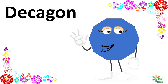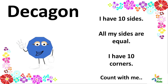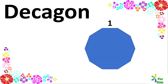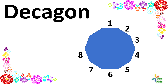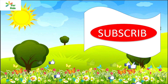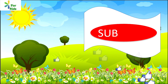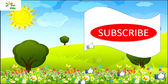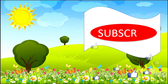Decagon. Say hi to decagon. I have ten sides. All my sides are equal. I have ten corners. Count with me. One, two, three, four, five, six, seven, eight, nine, ten. Decagon. Say it with me. Decagon. Okay, we have seen a lot today, haven't we? Let's learn more on my next video. Before that, remind mommy and daddy to subscribe to this channel to get new video updates. See you soon, bye!